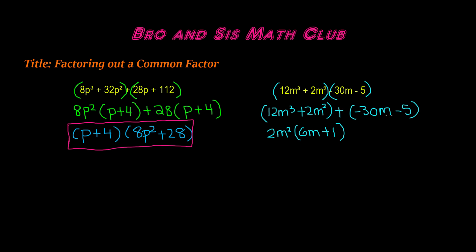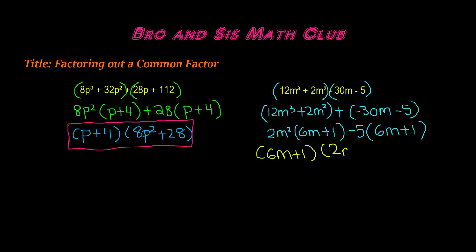Then we have a plus sign and we need to find the GCF of negative 30m and negative 5. The GCF is negative 5, because positive 1 times negative 5 gives negative 5, so we can write this as negative 5. When we divide, we get positive 6m plus 1. We see that the inside terms are the same — 6m plus 1 and 6m plus 1. So we write the final solution as 6m plus 1 in one set of parentheses, and 2m squared minus 5 in the second set of parentheses. And this is our final solution.